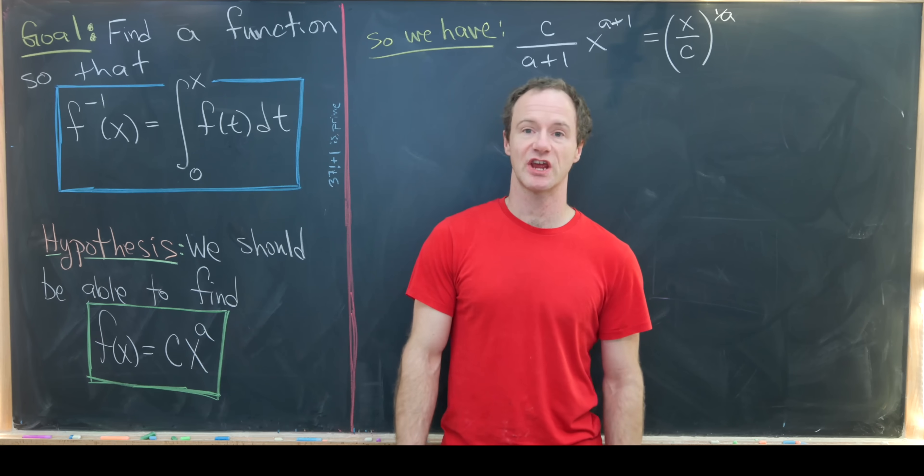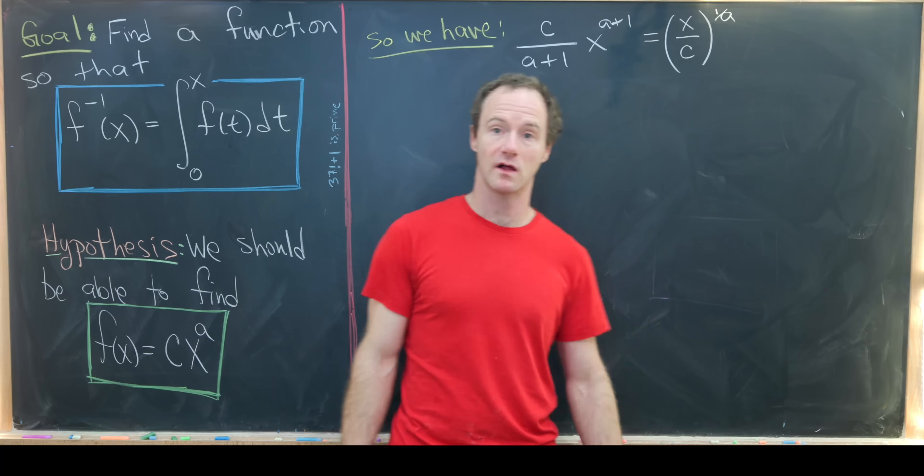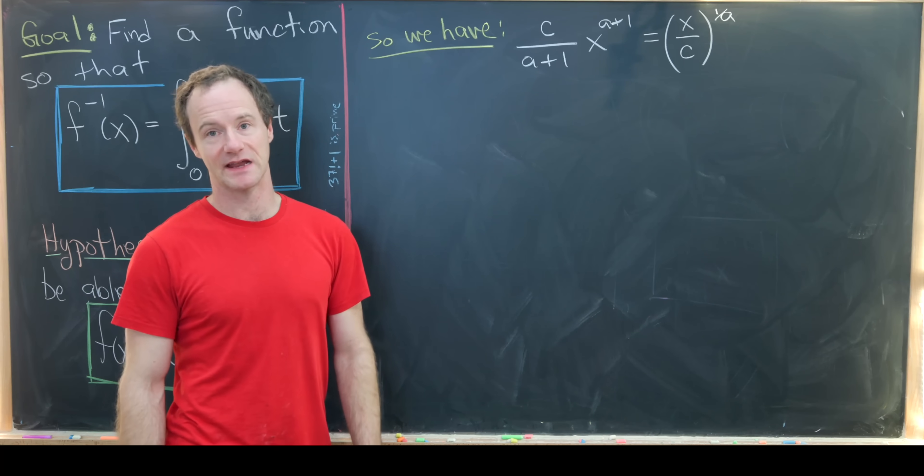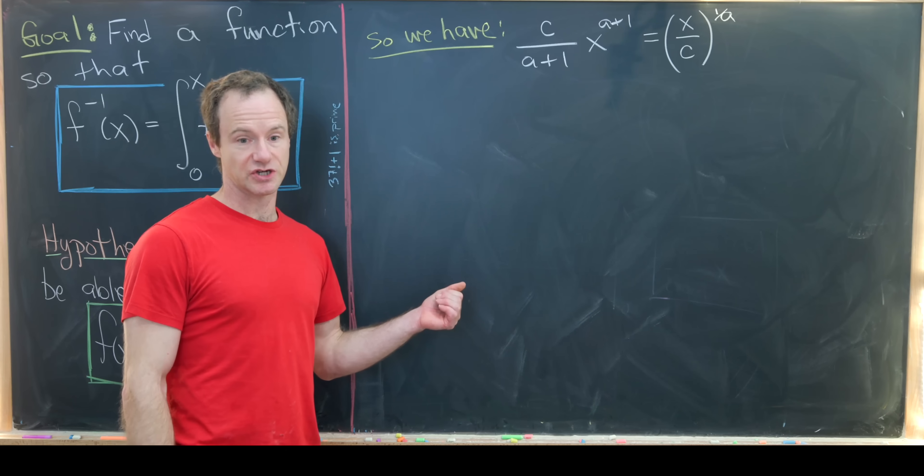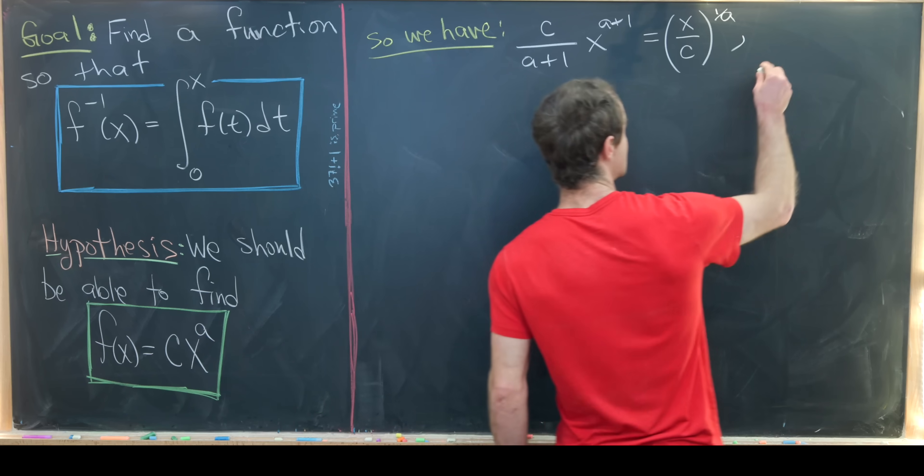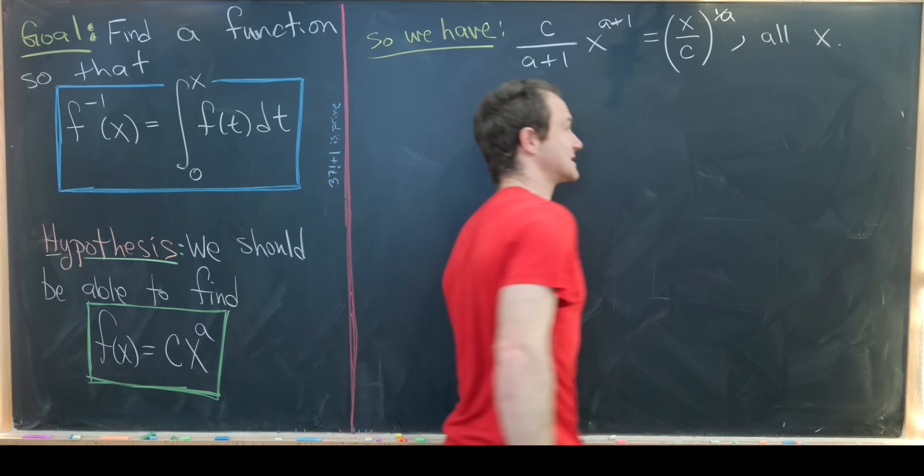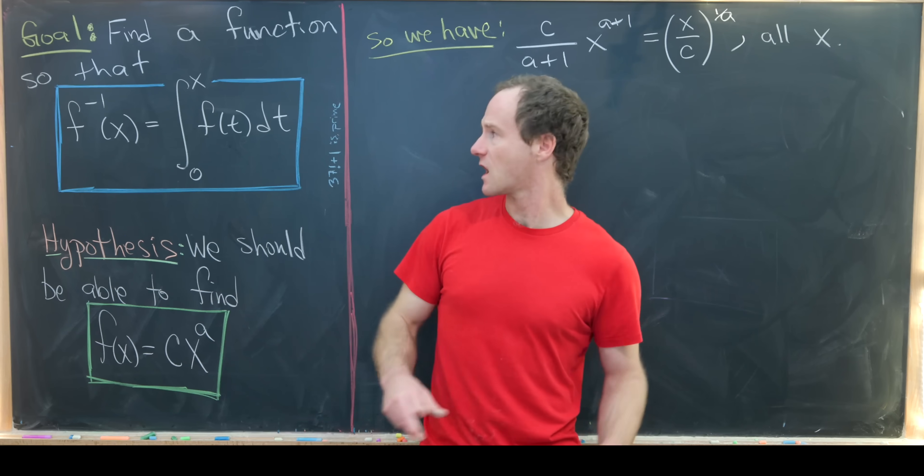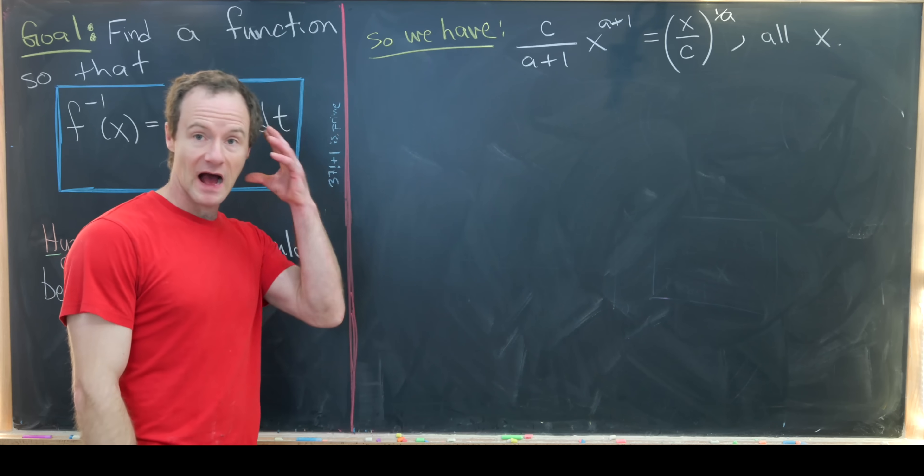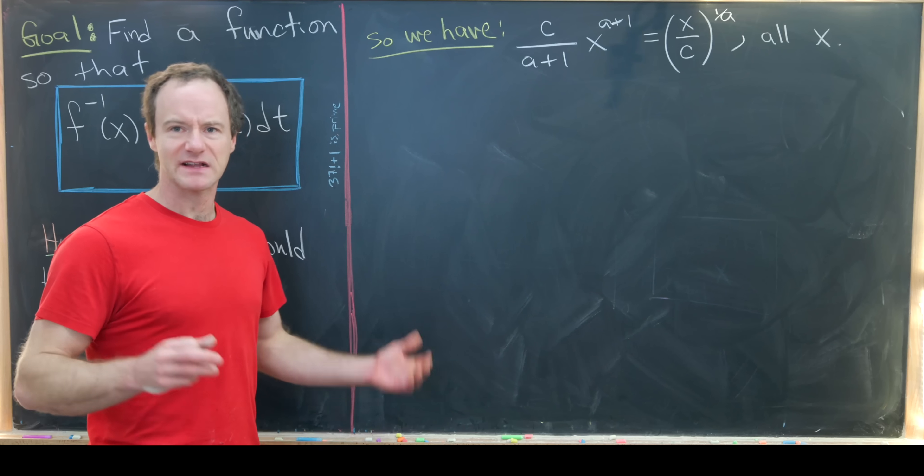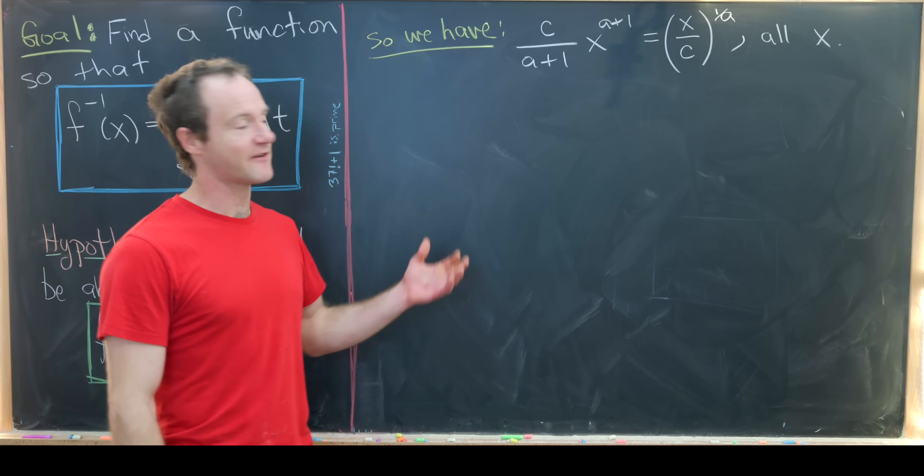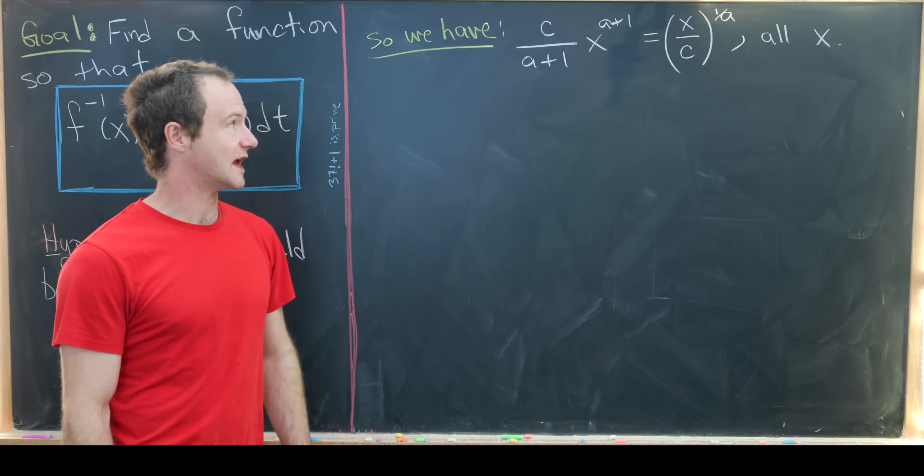By making this assumption on the shape of f and imposing this equality, we came up with the following equation that we should be able to solve for a and c. Since it's only a single equation, we should only be able to solve for one variable. But notice this is not a single equation—this is for all appropriate x in the domain. That means we've got infinitely many equations here, definitely enough to solve for both c and a.